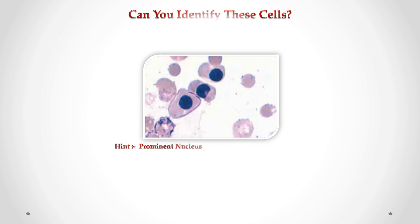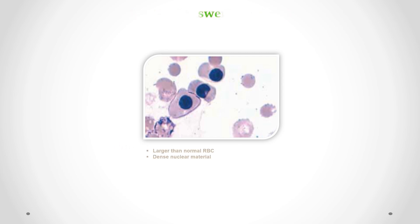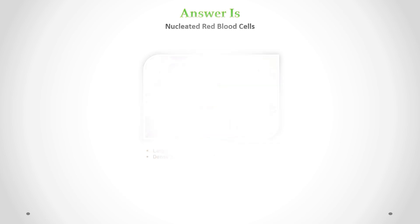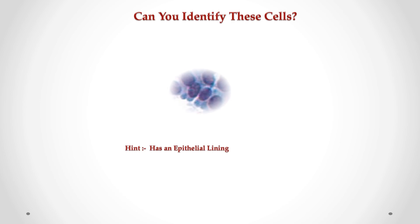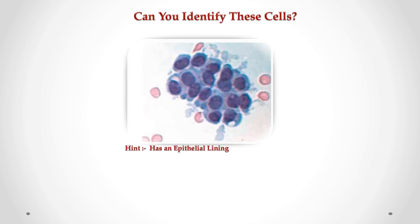Can you identify these cells in CSF? Correct answer is nucleated red blood cells. We can see these cells are larger than normal red blood cells and contain dense nuclear material. Can you identify these cells in CSF?